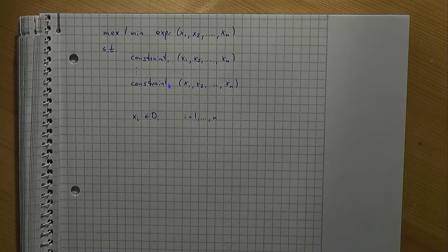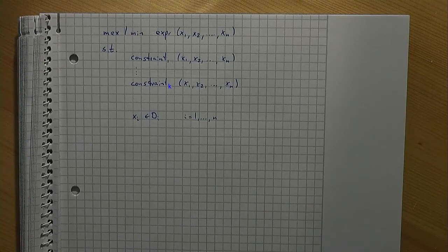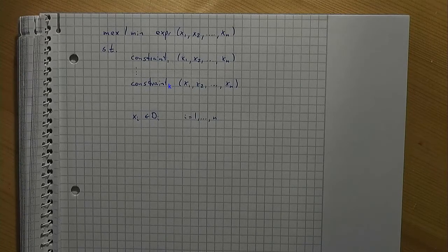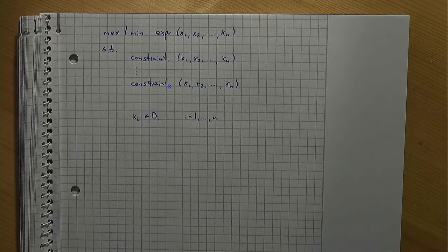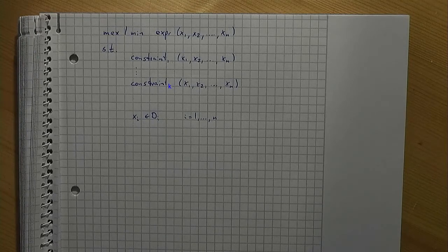Details of the constraints or the domains are not important. In a previous video on the elimination of variables, we have seen that variables can be removed from a model under certain circumstances. In some sense, we do the reverse now. We introduce new decision variables y1, y2, and so on, that are copies of the x variables. The property of being a copy is added to the model by adding respective constraints.